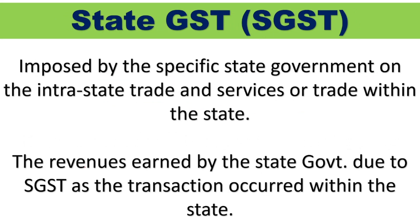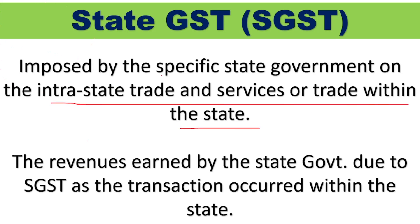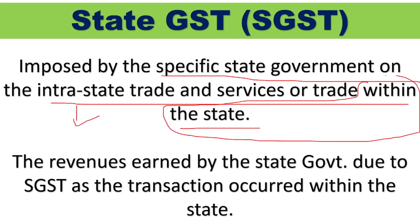State GST or SGST is imposed by the specific state government on intrastate sales and services — trade within the state. When transactions are held within the state, two taxes will be imposed: CGST will also be imposed and collected by the Central Government, and SGST will also be imposed and collected by the respective state government. Whatever SGST is collected, the state will earn it, and whatever CGST is imposed, the Central Government will actually earn it.